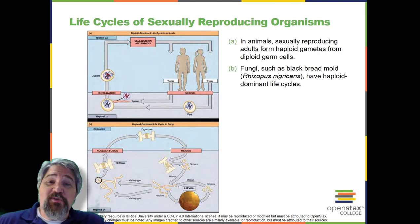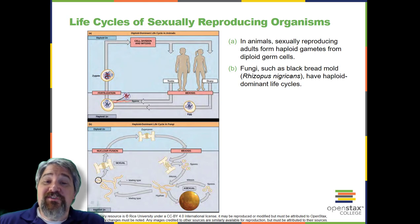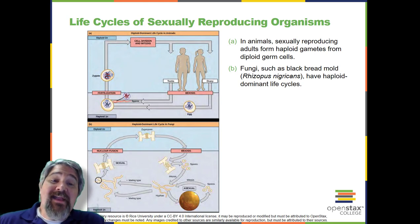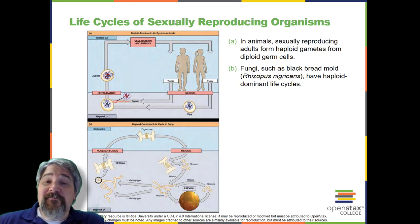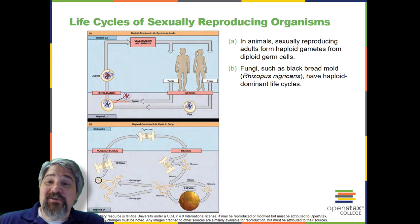Life cycles of sexually reproducing organisms. Fertilization and meiosis alternate in sexual life cycles. What happens between these two events depends on the organism. The process of meiosis reduces the resulting gamete's chromosome number by half. Fertilization, the joining of two haploid gametes, restores the diploid condition. There are three main categories of life cycles in multicellular organisms. Diploid dominant, in which the multicellular diploid stage is the most obvious life stage and there is no multicellular haploid stage, as with most animals including humans.